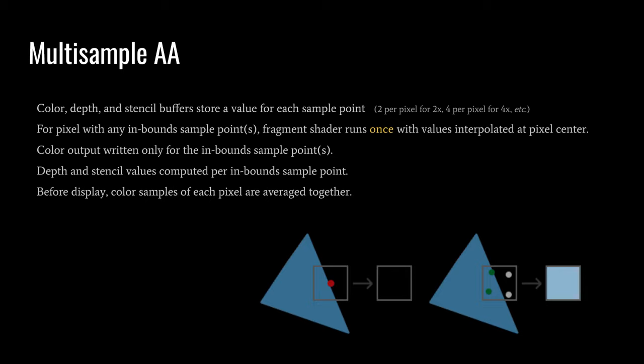So here in the diagram we have the two left sample points, those are inbounds, so the color value is only going to be written for those sample points, but not the two others. So this is how the rendering proceeds, and then when all the rendering is done and we're ready to display, the four color values per each pixel get averaged together into one color value, and that is what we actually see.